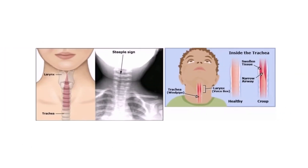Here is the larynx and the trachea. This is a healthy airway — as you can see, it's very patent. But this is croup. Notice the swollen tissue here. What it's doing is narrowing the airway, and that narrowing is what leads to the symptomatology of croup.